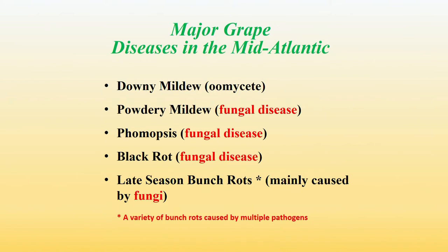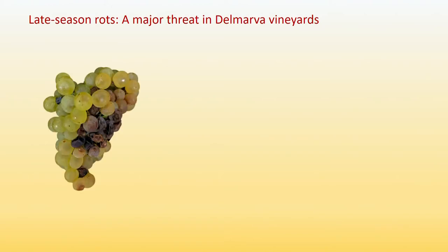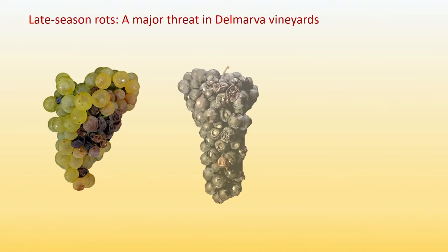I'd like to focus more on late season bunch rots. Late season bunch rots is a term that describes different diseases that occur later in the season. It has been considered a major threat in our region. You probably see grapes like this — a lot of them are not easy to identify to figure out what exactly caused the issue.